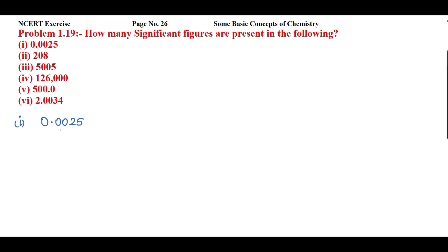The first problem is 0.0025. In this case, the leading zeros are non-significant in nature — these zeros are non-significant. So how many significant figures are there? 1, 2. There are two significant figures.